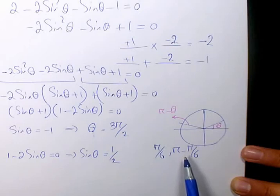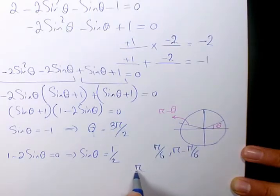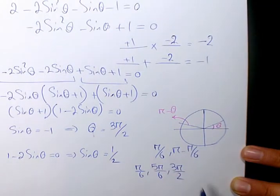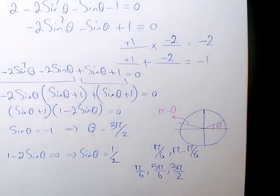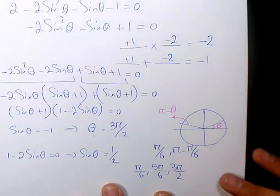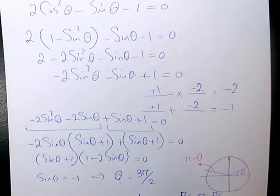Pi minus pi over 6, with a common denominator, gives 5π over 6. So we have three final answers: theta equals π over 6, theta equals 5π over 6, and theta equals 3π over 2. I hope you enjoyed this video — please leave a comment if you have any questions and I'll get back to you as soon as possible.